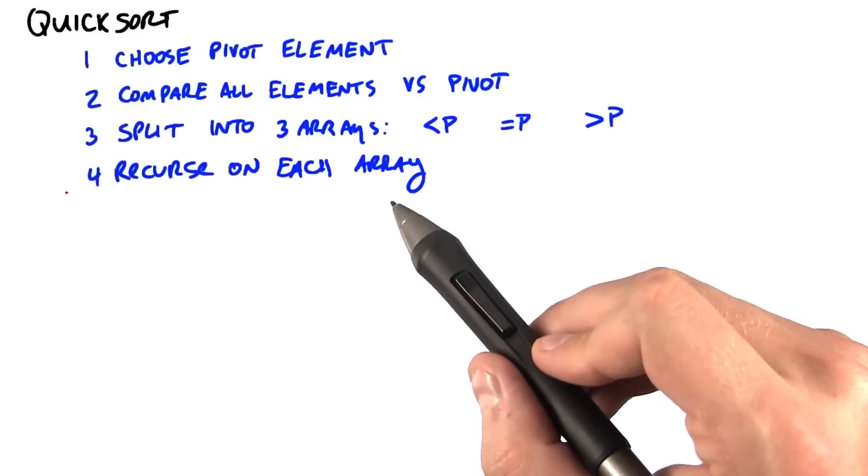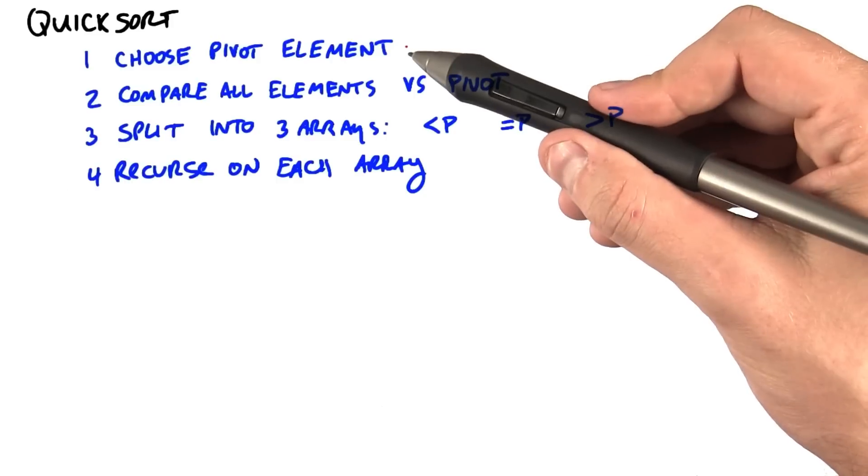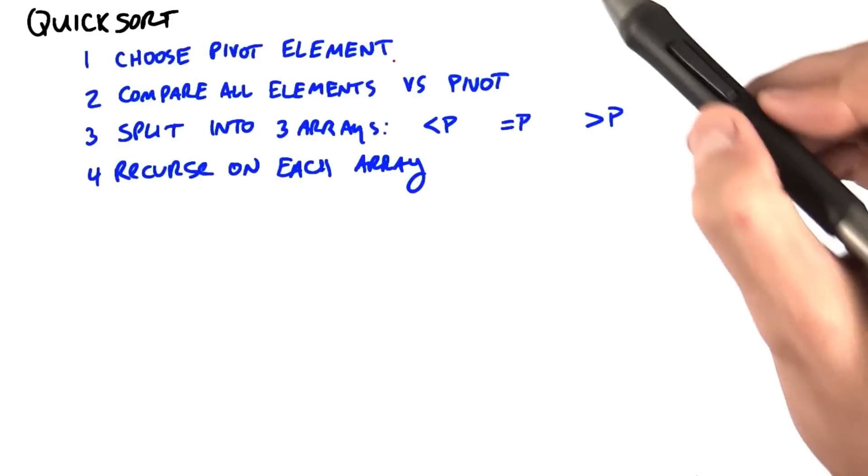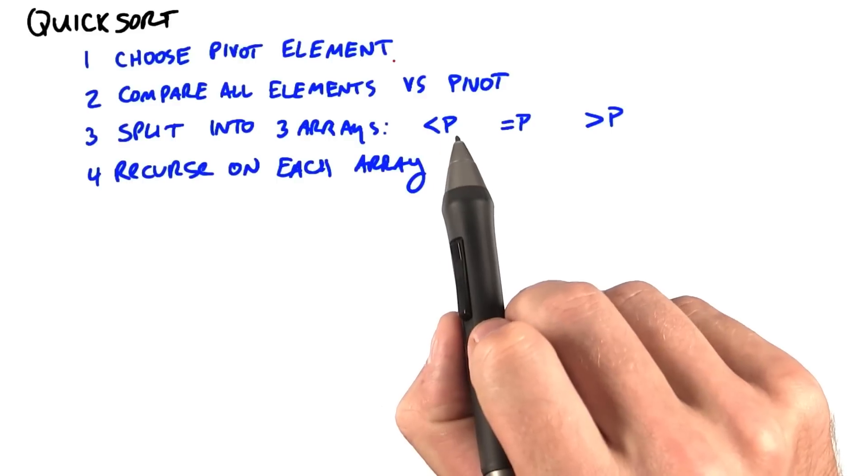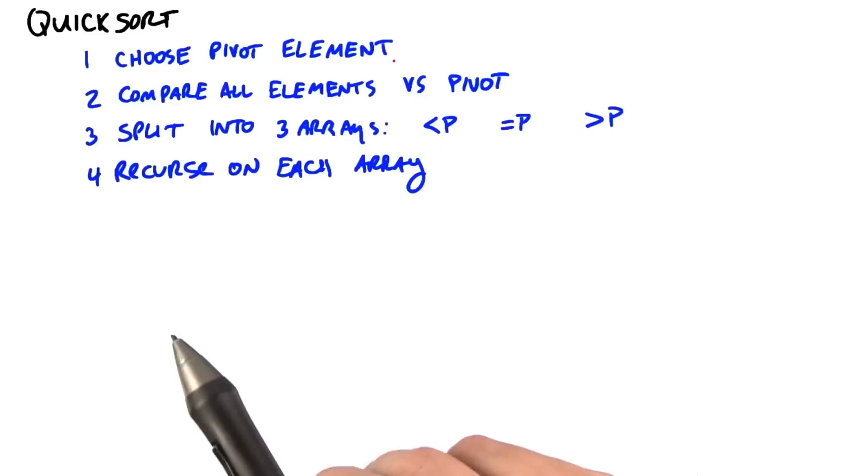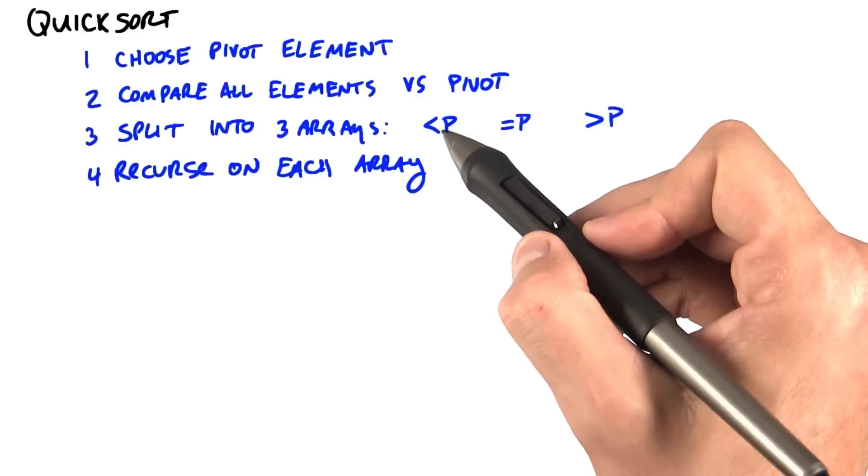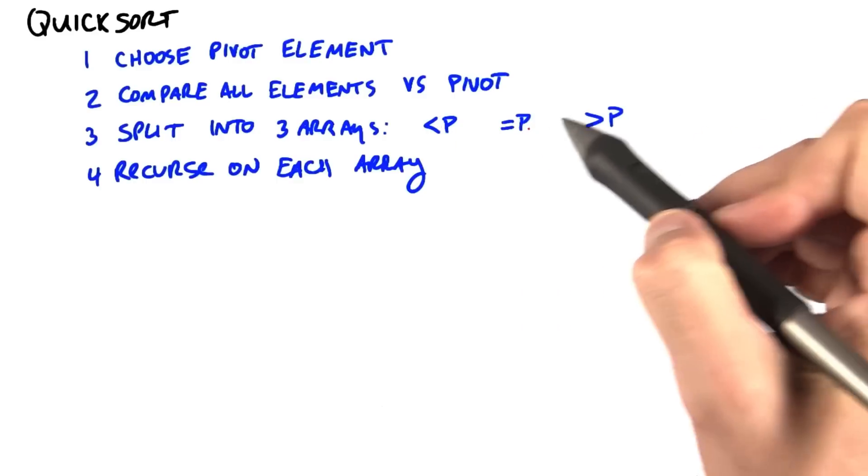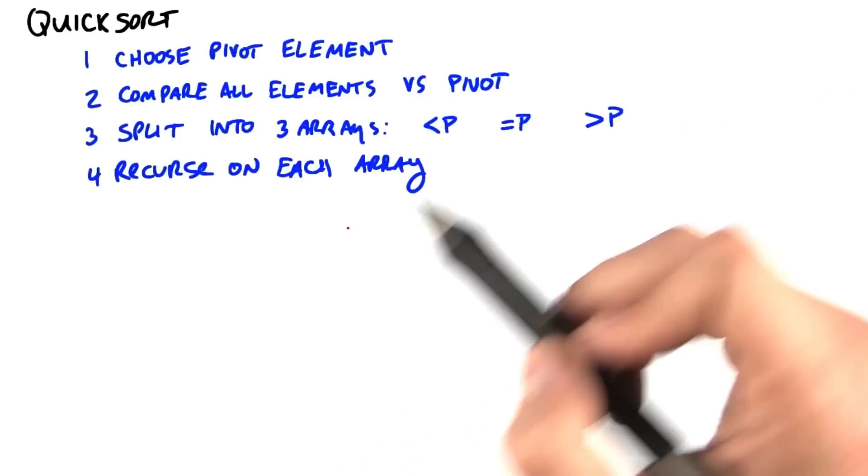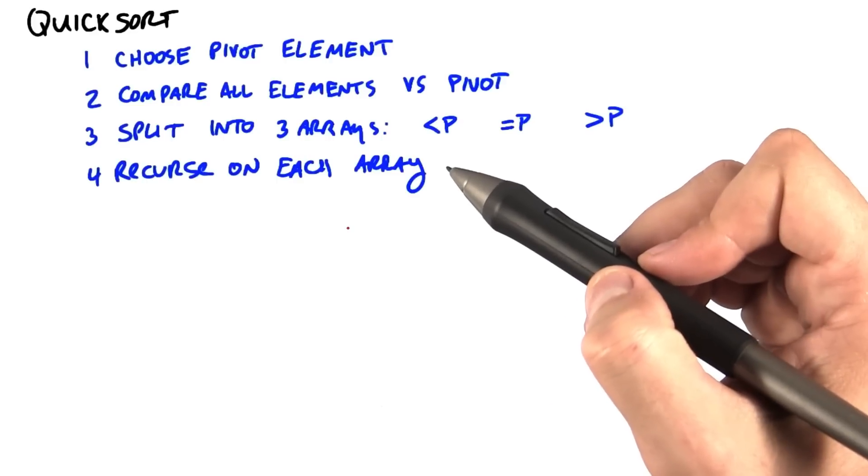So let's recap what the QuickSort algorithm does. First, it chooses a pivot element of one particular element from within its input. Then it compares all of the elements in its input to the pivot, and it uses that comparison to divide the input into three subarrays: those that are less than the pivot, those that are equal to the pivot, and those that are greater than the pivot. And then it calls QuickSort on each of these subarrays and continues until the entire input is sorted.